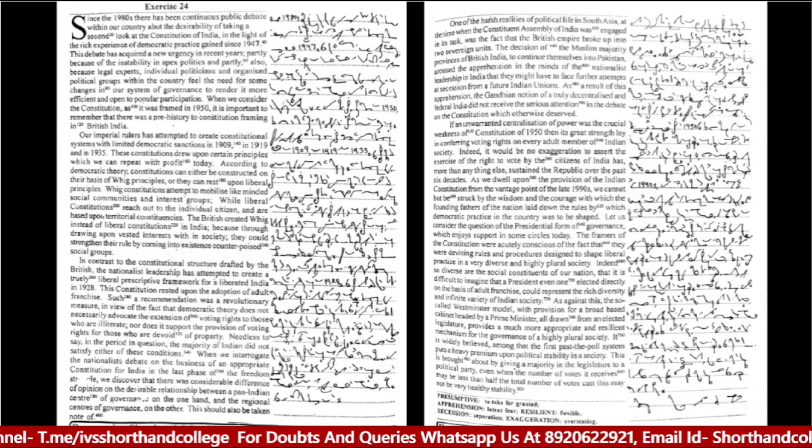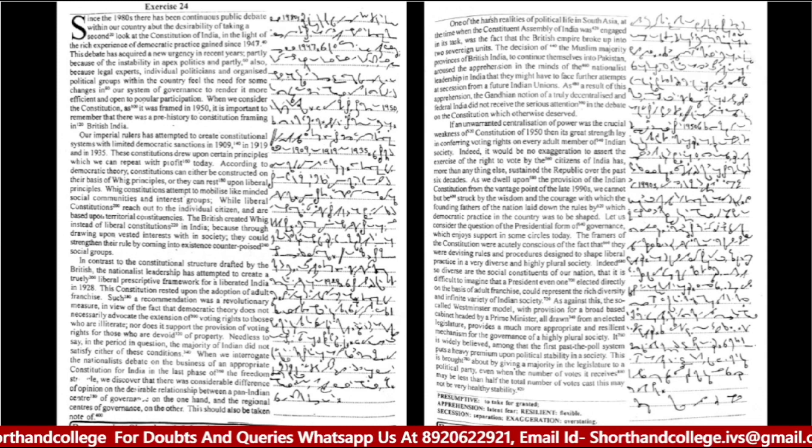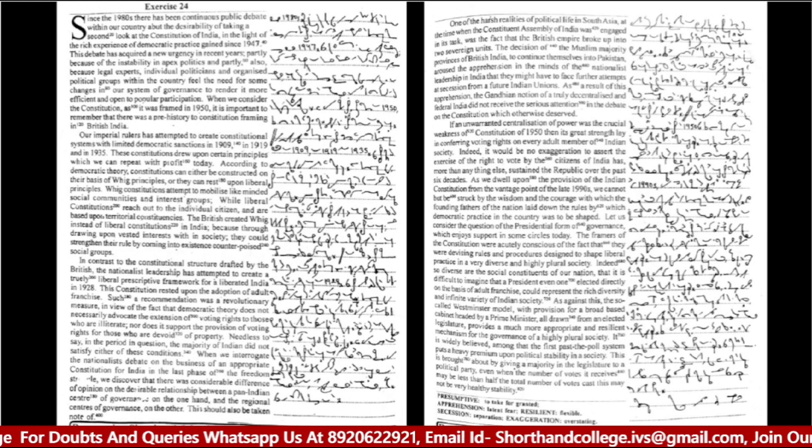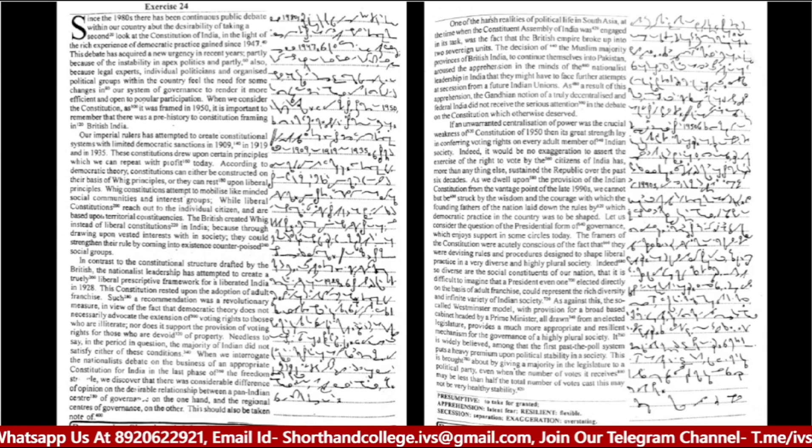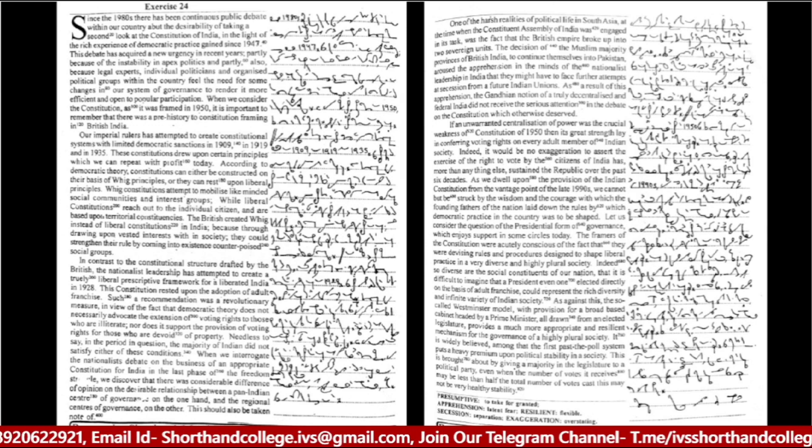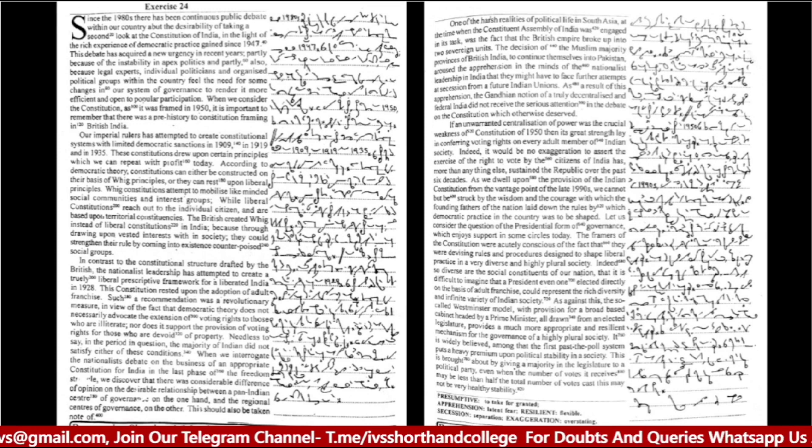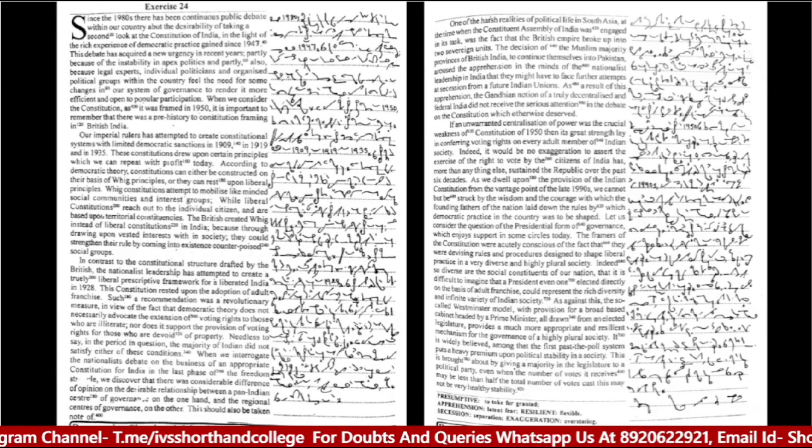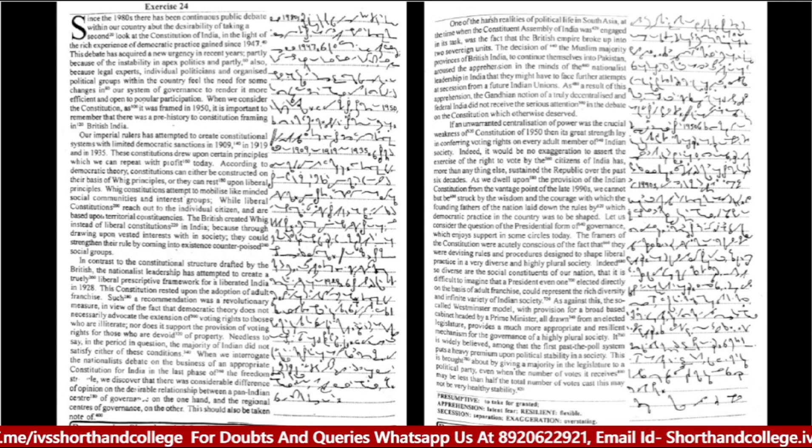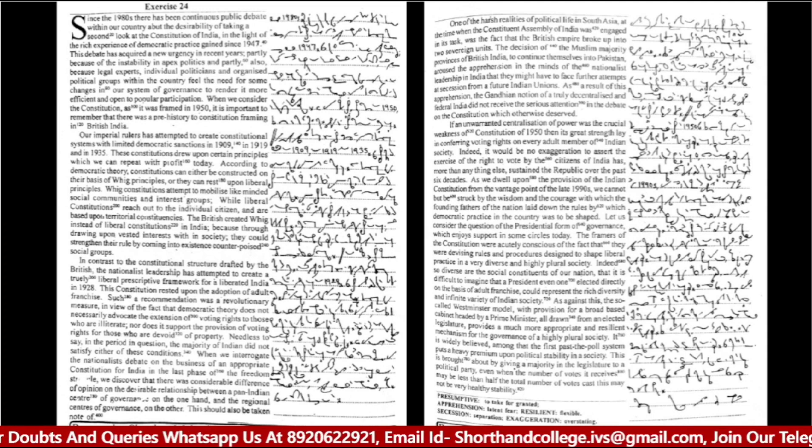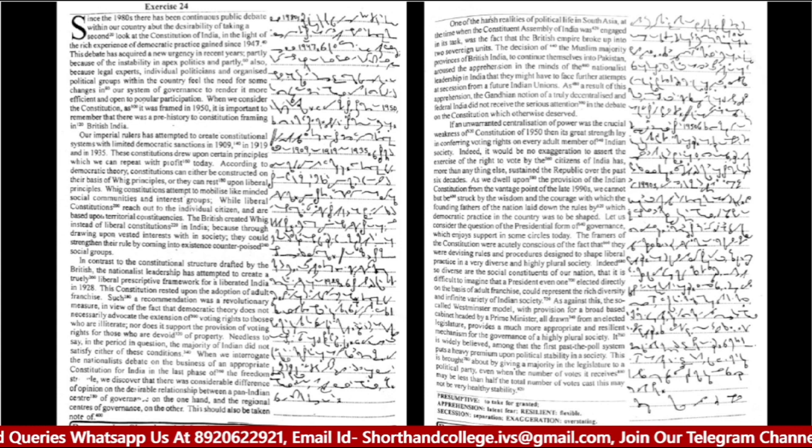According to democratic theory, constitutions can either be constructed on the basis of wick principles or they can rest upon liberal principles. Wick constitutions attempt to mobilize like-minded social communities and interest groups, while liberal constitutions reach out to the individual citizen and are based upon territorial constituencies. The British created wick instead of liberal constitutions in India because through drawing upon vested interests within society, they could strengthen their rule by bringing into existence counterpoised social groups.